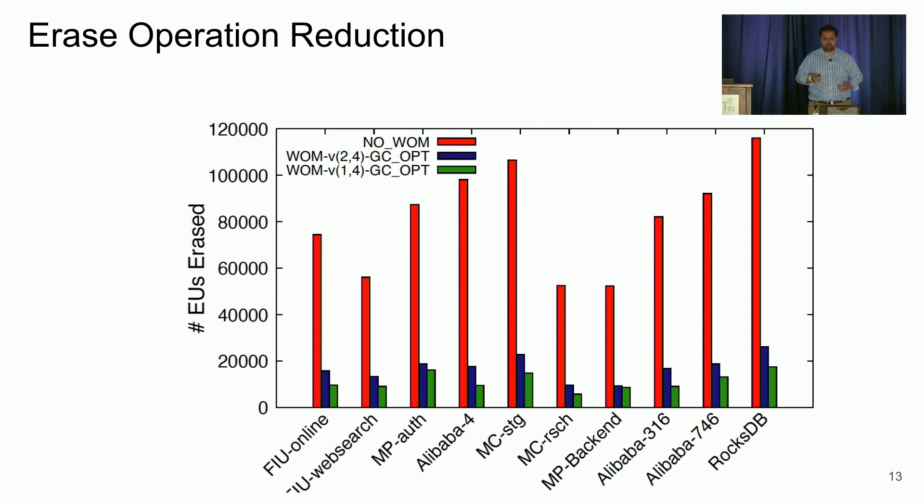On the x-axis, we show the different workloads. On the y-axis, we show the number of erase units that were erased. Here, lower is better. The red bars indicate the amount of erase units that were erased in no WOM configuration. And the blue and the green bar indicate the amount of gains that we can get in two configurations of WOM V codes. We see that across all workloads, we are consistently able to beat the no WOM configuration using our WOM V codes and GC optimizations.